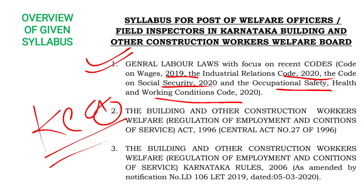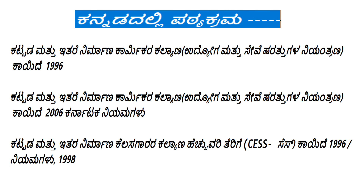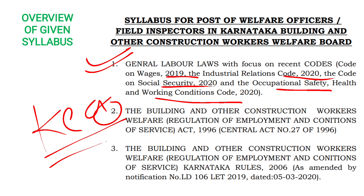The second point of the syllabus is the Building and Other Construction Workers Welfare — Regulation of Employment and Conditions of Service Act 1996. This also covers the Building and Other Construction Workers Welfare, Regulation of Employment and Conditions of Service, Karnataka Rules 2006 — specific rules related to Karnataka amended from the central-level law.